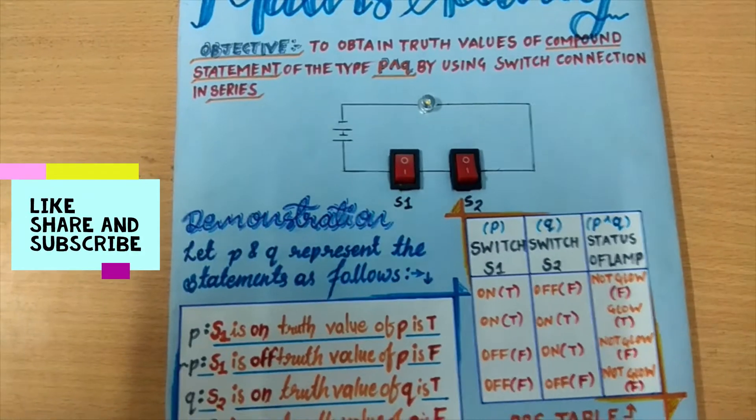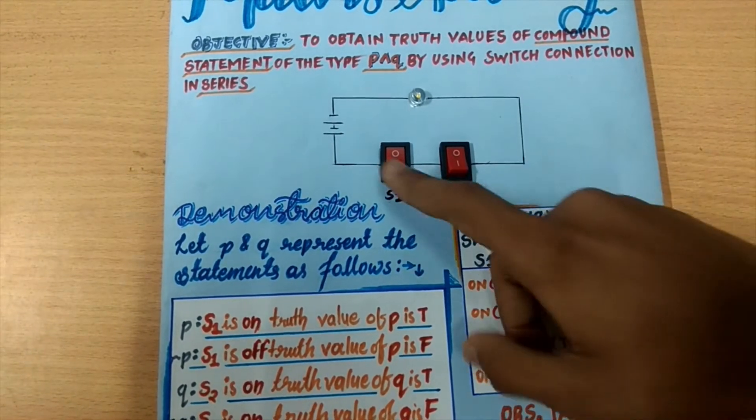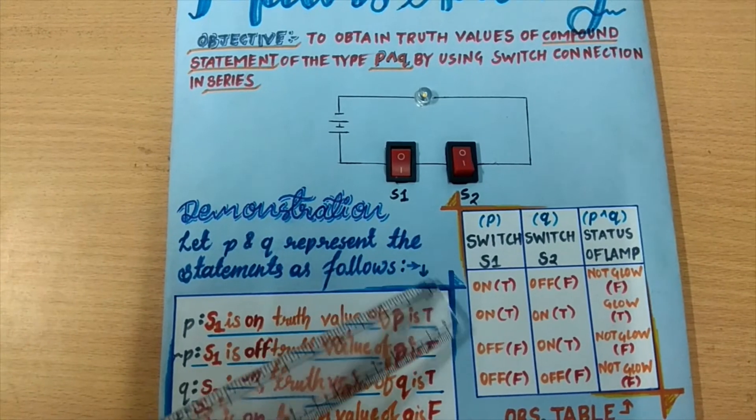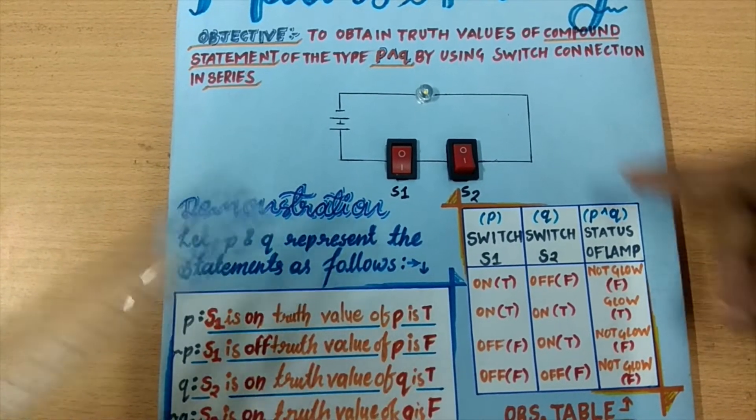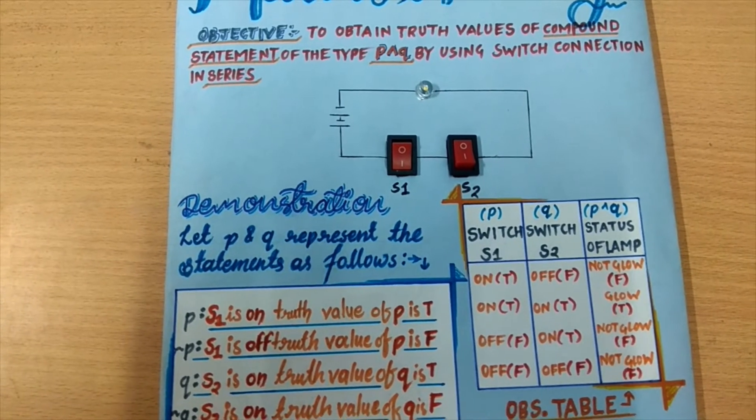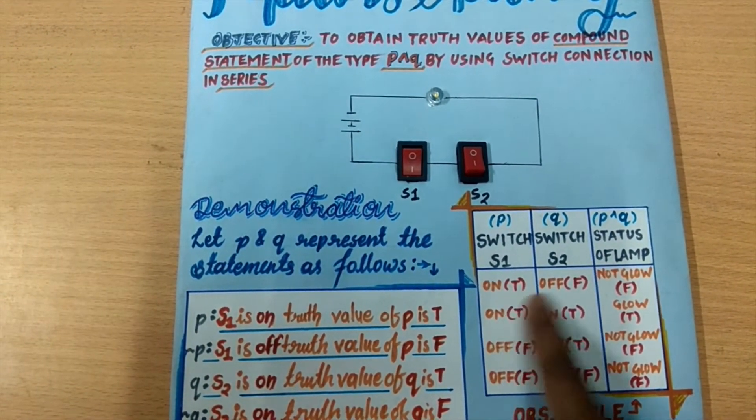Let us check, if the truth value of P is true, then we make switch 1 on and statement Q is false, then we keep the switch S2 off. Then we see that bulb doesn't blow. So the compound statement P and Q is false.